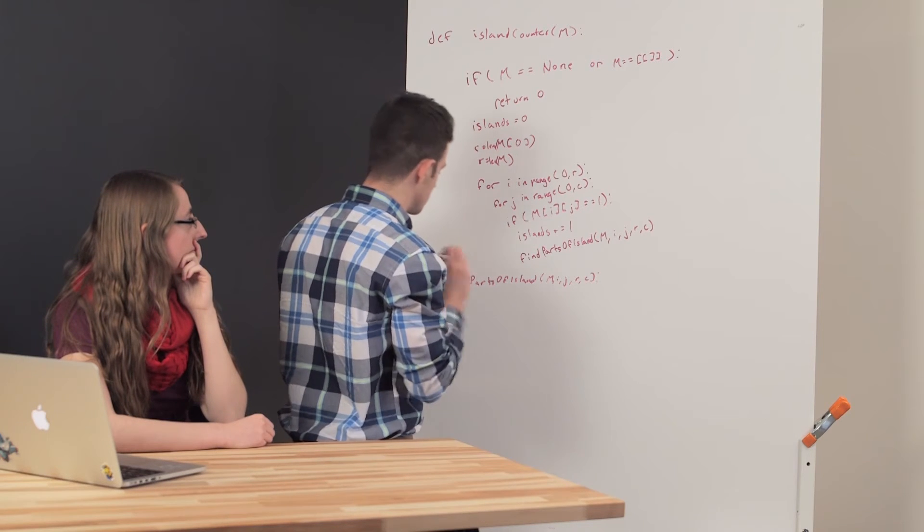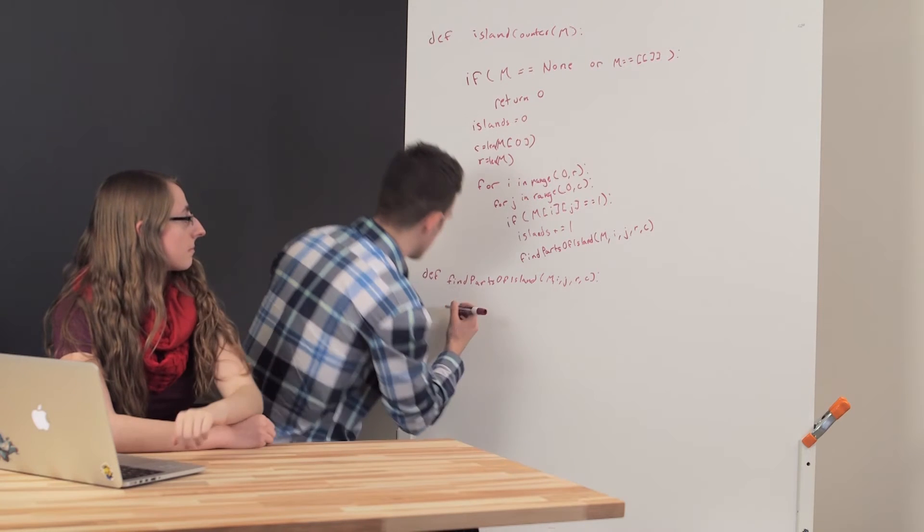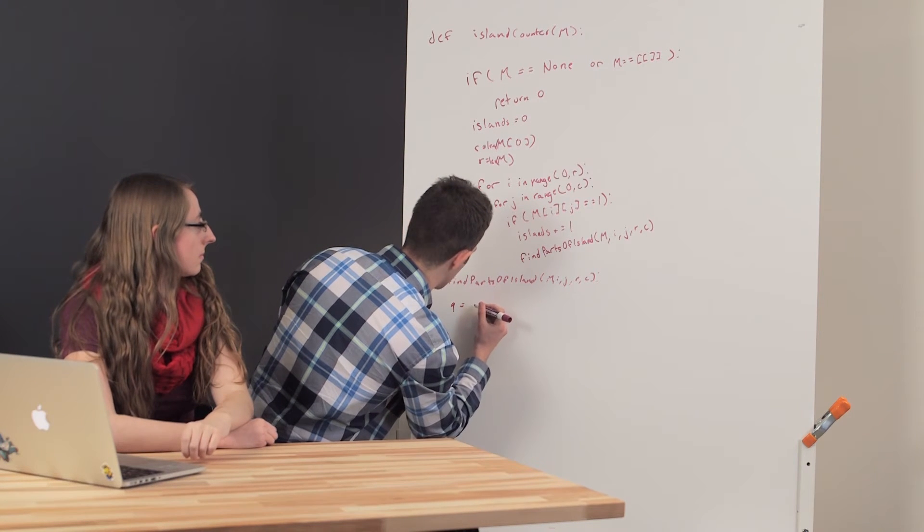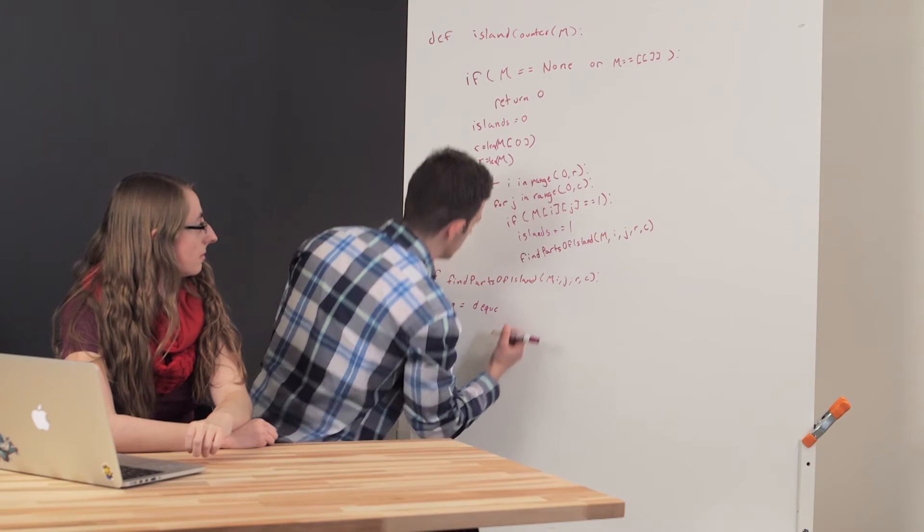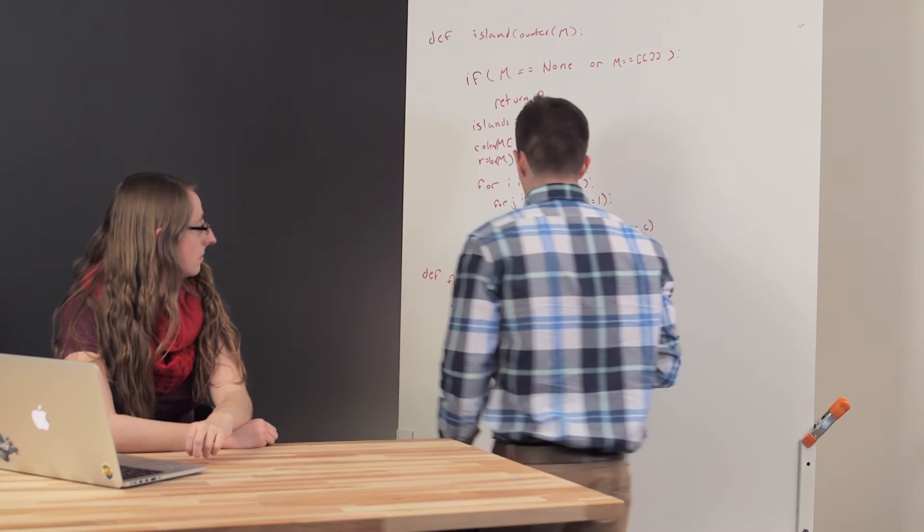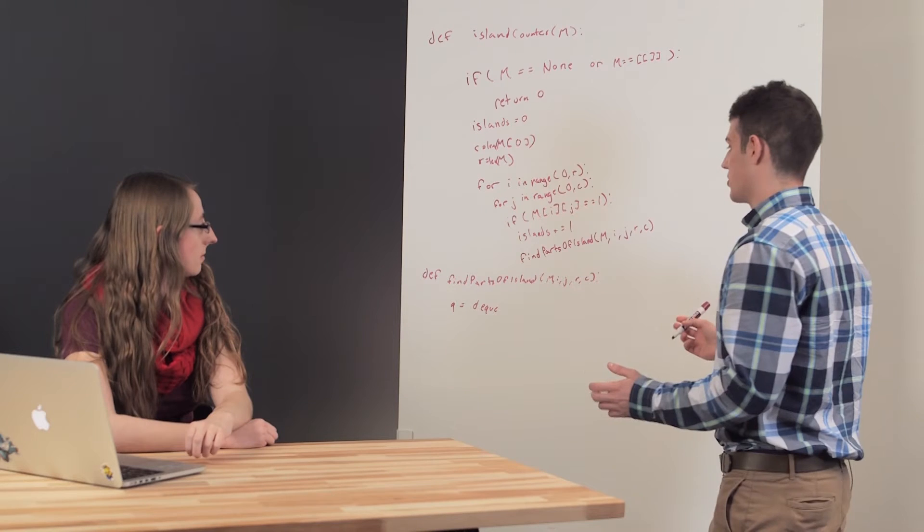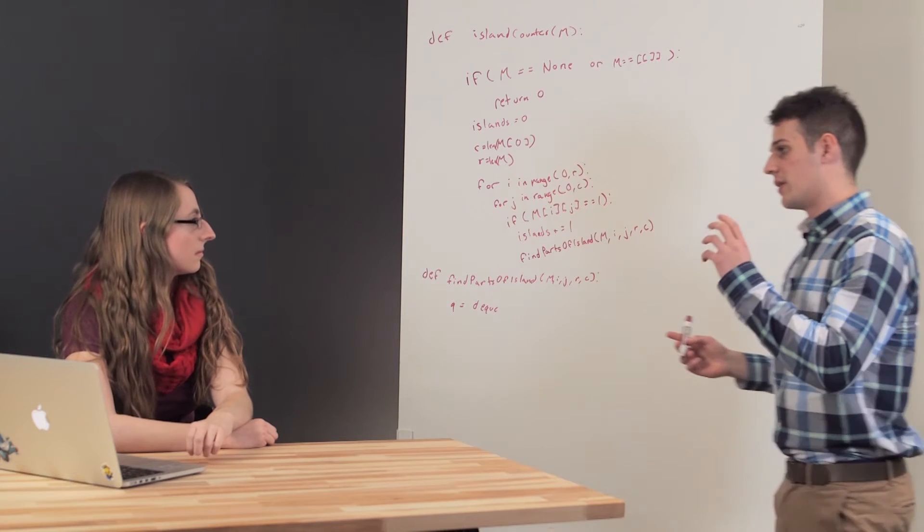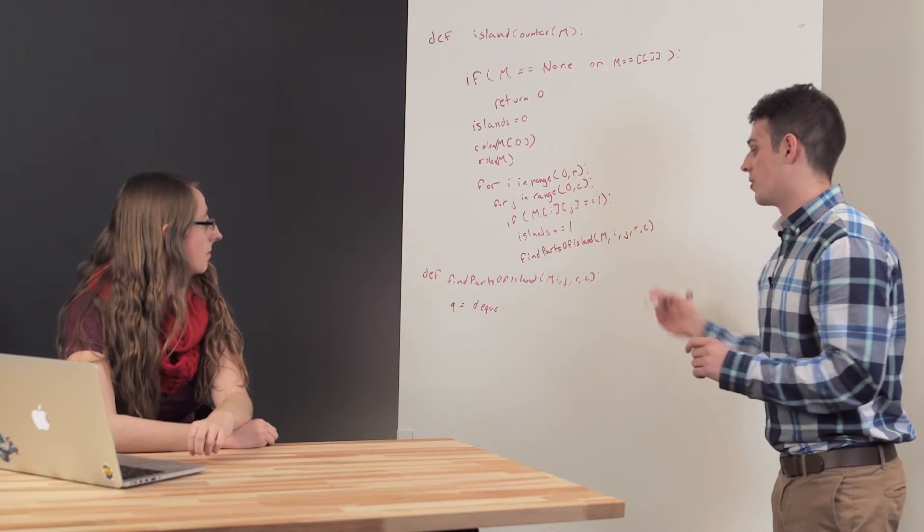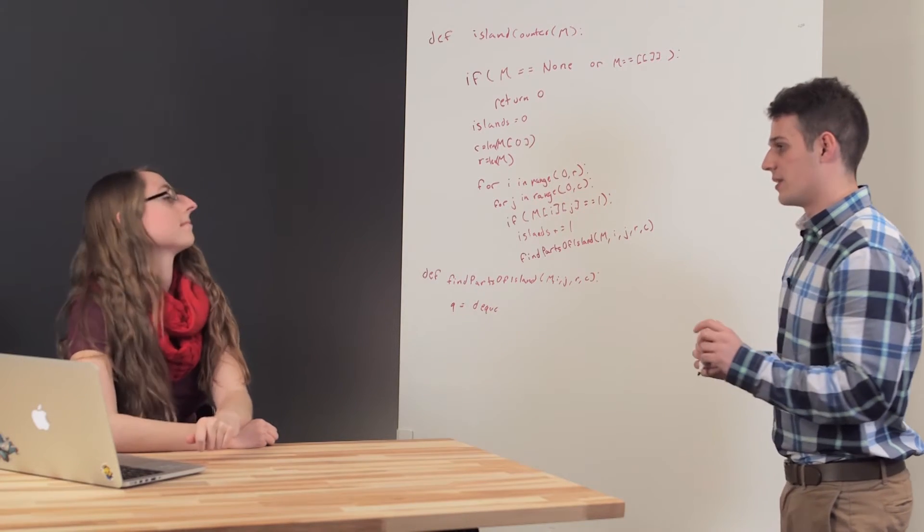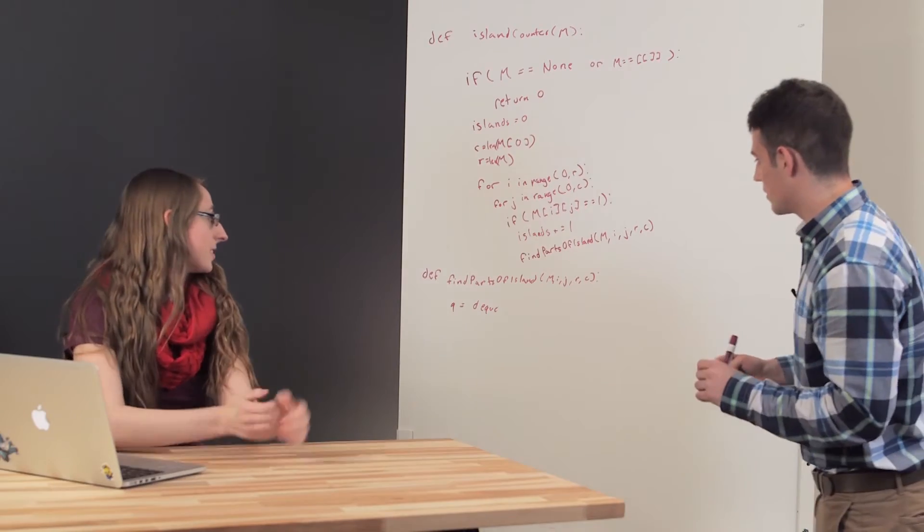So the first thing I want to do is I want to initialize a queue. Since we're using a breadth-first search here, I want to be able to use a queue so that I could get the first element when I add an element to the queue. Yeah, that makes perfect sense.